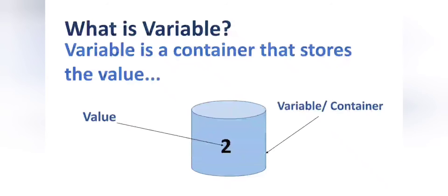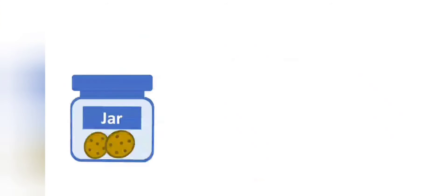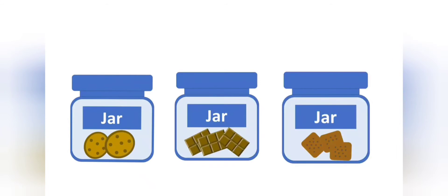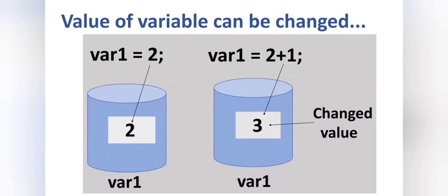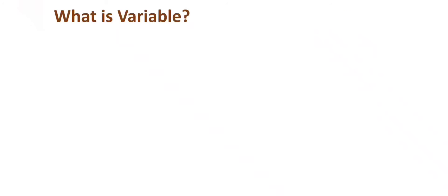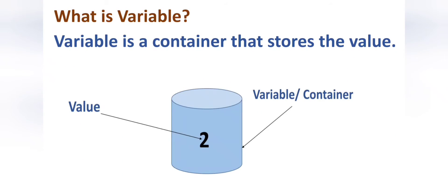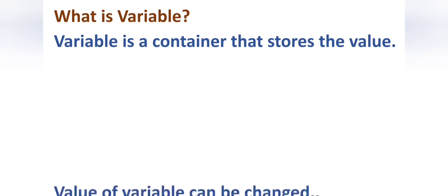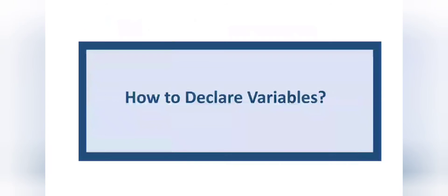Basically, a variable is a container that stores a value. The second thing about a variable is that its value can be changed — the meaning of the word 'variable' itself is to vary or to change. Just as we can store chocolates or biscuits instead of cookies in a jar, the content can be changed. Similarly in Java we can change the value of a variable, which is also called variable reassignment.